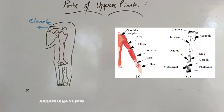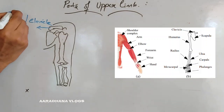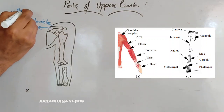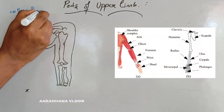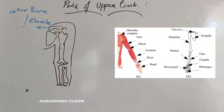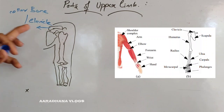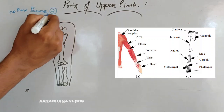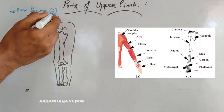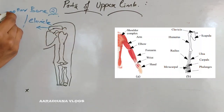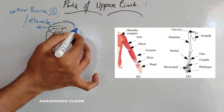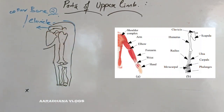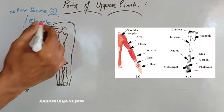The clavicle bone is also called the collar bone. In our body there are two collar bones, one on each side, so the total number is two. Numbers are very important from the entrance exam point of view. This region here is called the shoulder region.